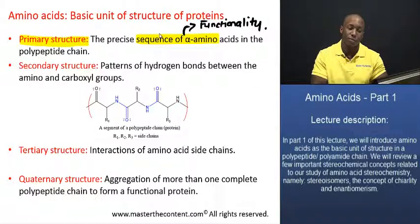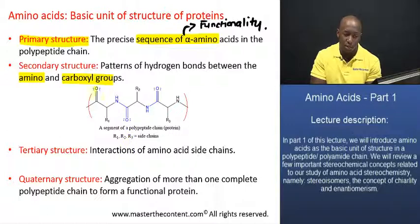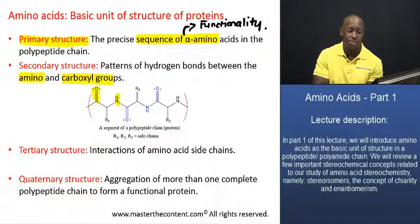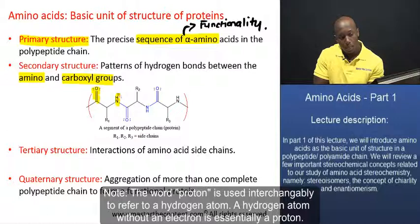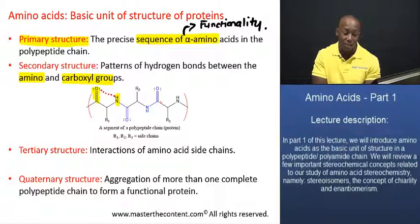As far as the secondary structure is concerned, it basically refers to the patterns of hydrogen bonds between the amino and carboxyl groups. If we direct attention to the diagram at the center of the screen, in a polypeptide chain we have these carboxyl groups in the backbone of the amino acid chain, and we also have amino groups bonded to hydrogen. A hydrogen bond can form between this hydrogen atom and that oxygen — you can form a hydrogen bond between those two atoms — and that can happen in various different parts within that polypeptide chain.